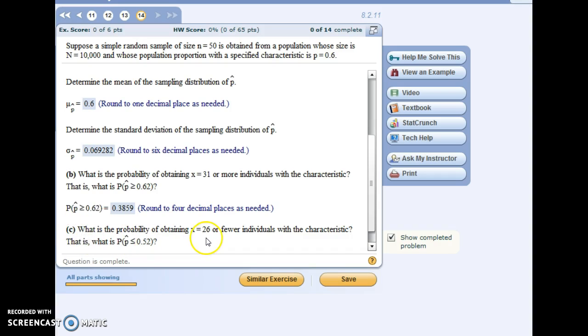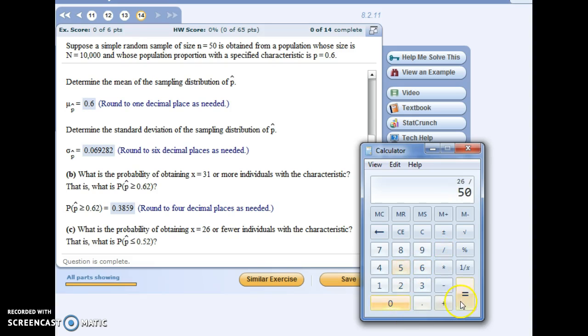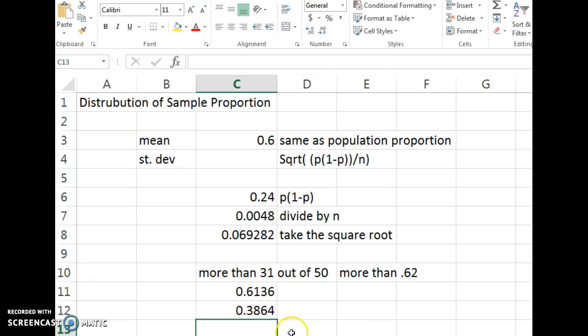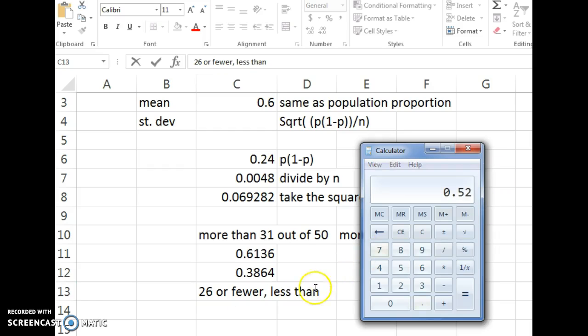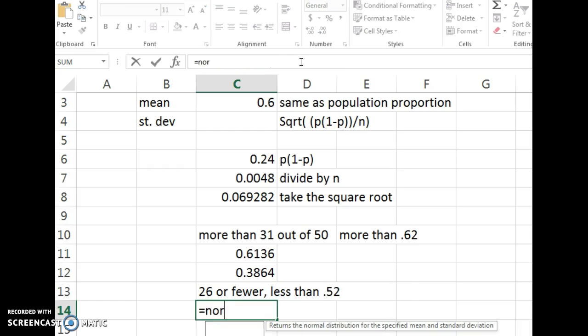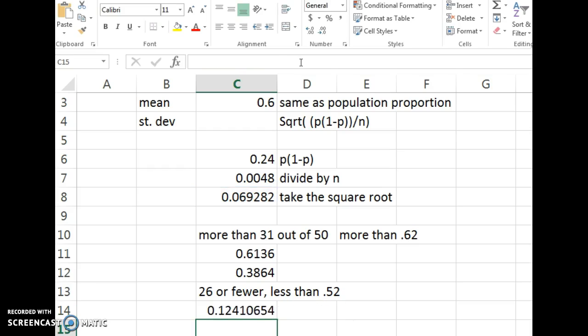And the last part asks, what's the probability of 26 or fewer? So again, we'll check. 26 out of 50 is .52 or 52%. So that's quite a bit away from the population proportion of 60%. So if we jump back into Excel, we're doing 26 or fewer, less than 52%. Since it's approximately normal, we'll do normal distribution. 52%. But our mean is 60%. Our standard deviation, we can actually use cell reference here. Make sure I don't make a typo. And then here's the probability that we take a sample of size 50 and there's 26 or fewer people who have that characteristic.